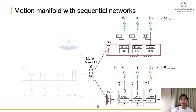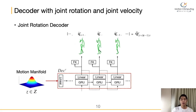Now let me introduce our decoder model. Our decoder model consists of two kinds: one decoder handles joint rotation, and the other handles joint rotation and velocity. Both decoders are based on GRU cells, while the connection structure of the two are different. Unlike the rotation decoder, the velocity decoder has a residual connection between the input and output to construct joint rotation. The decoders are trained simultaneously with backpropagation. Let's see the structure of the joint rotation decoder in the figure.